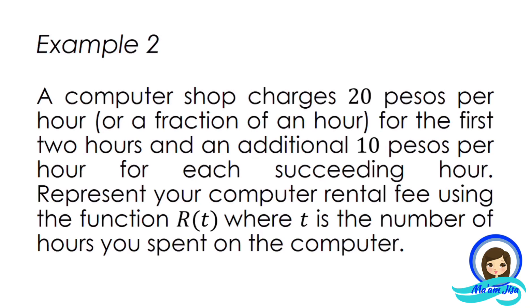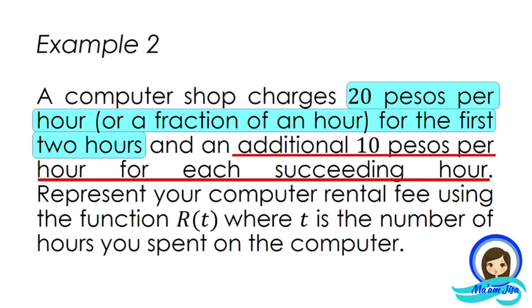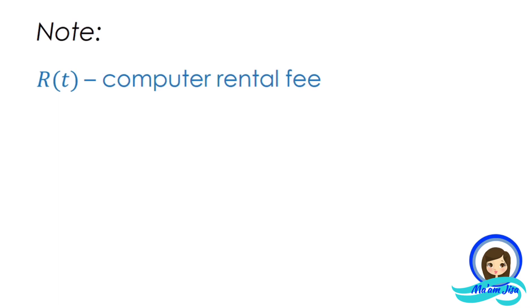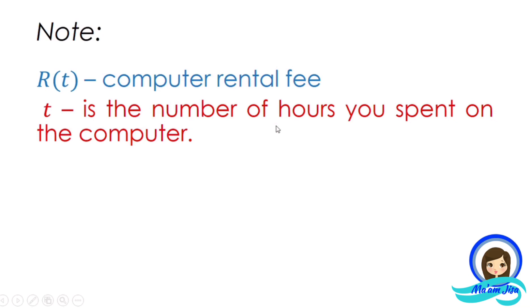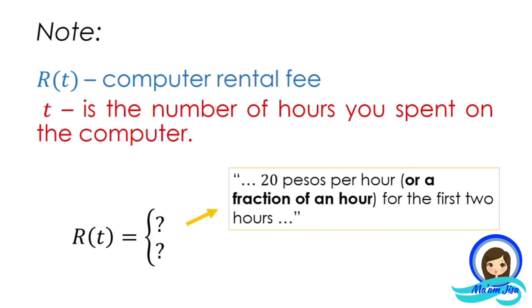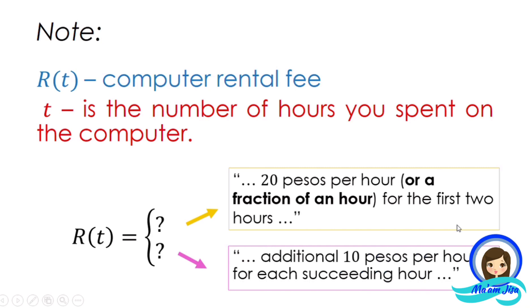Let us identify the given data in this problem. First, we have 20 pesos per hour or a fraction of an hour for the first two hours. The second given is an additional 10 pesos per hour for each succeeding hour. Note that the problem uses r of t to represent the computer rental fee, where t is the number of hours spent on the computer. There are two equations to make.